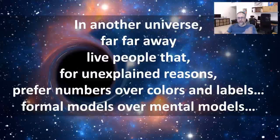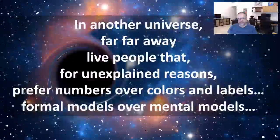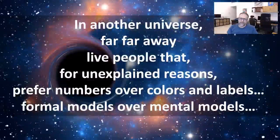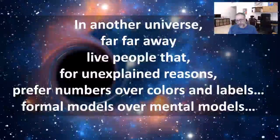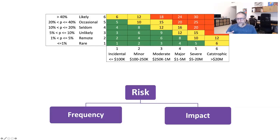Now let's take the evolution further. There's another universe — these people also don't like colors and labels, but they also don't like mental models. They like formal models. Before, we had risk expressed as a two-dimensional model of frequency and impact. But when they started discussing this, they realized so many things needed consideration: threats, intentions, capabilities, vulnerabilities, loss types affecting availability, integrity, confidentiality, assets, crown jewels, attack types, controls, laws, and regulations. Where does it all fit in a simple two-dimensional model? They realize this model doesn't support their thinking process.